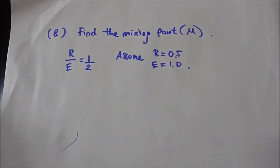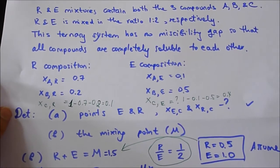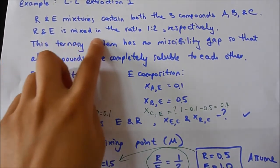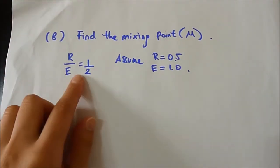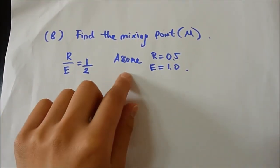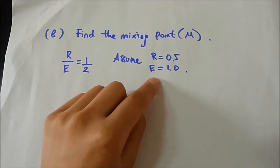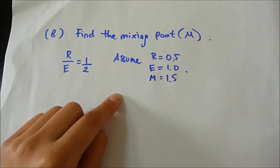The problem also asks us to find the mixing point M. From the problem statement, R and E are mixed in the ratio 1 to 2 respectively, so R/E = 1/2. We can assume R = 0.5 and E = 1, giving M = R + E = 1.5.